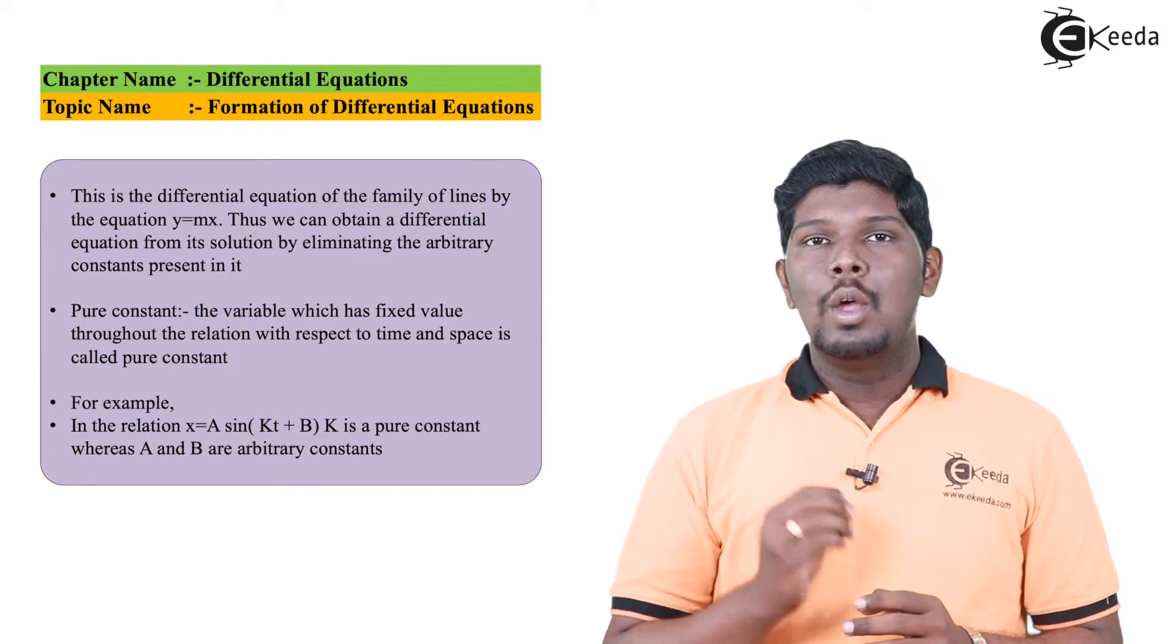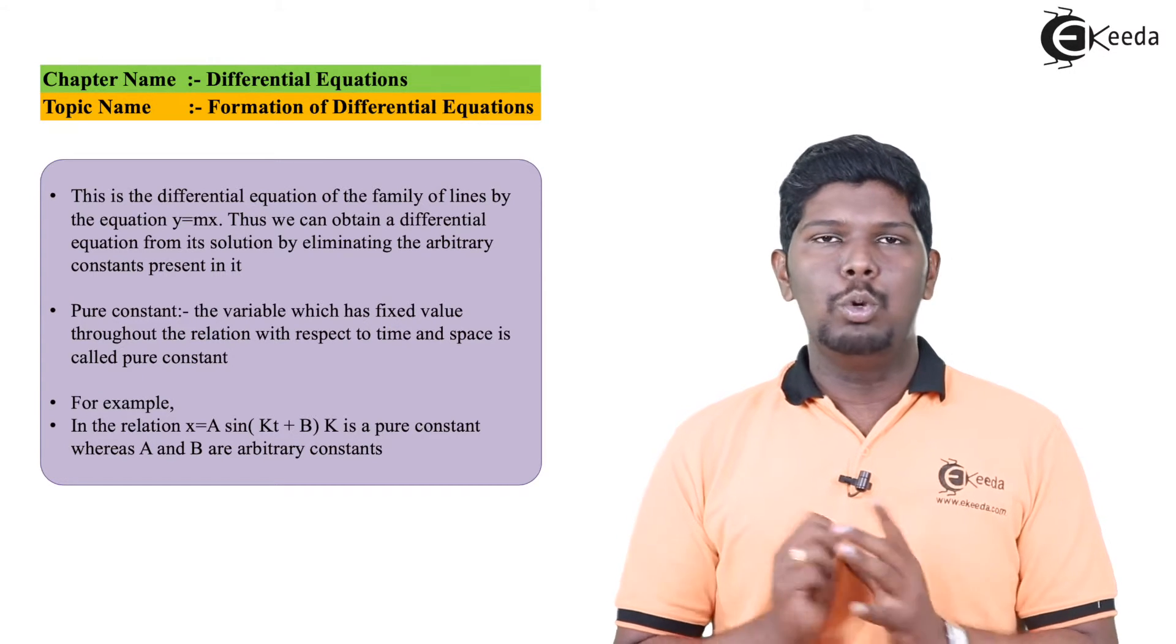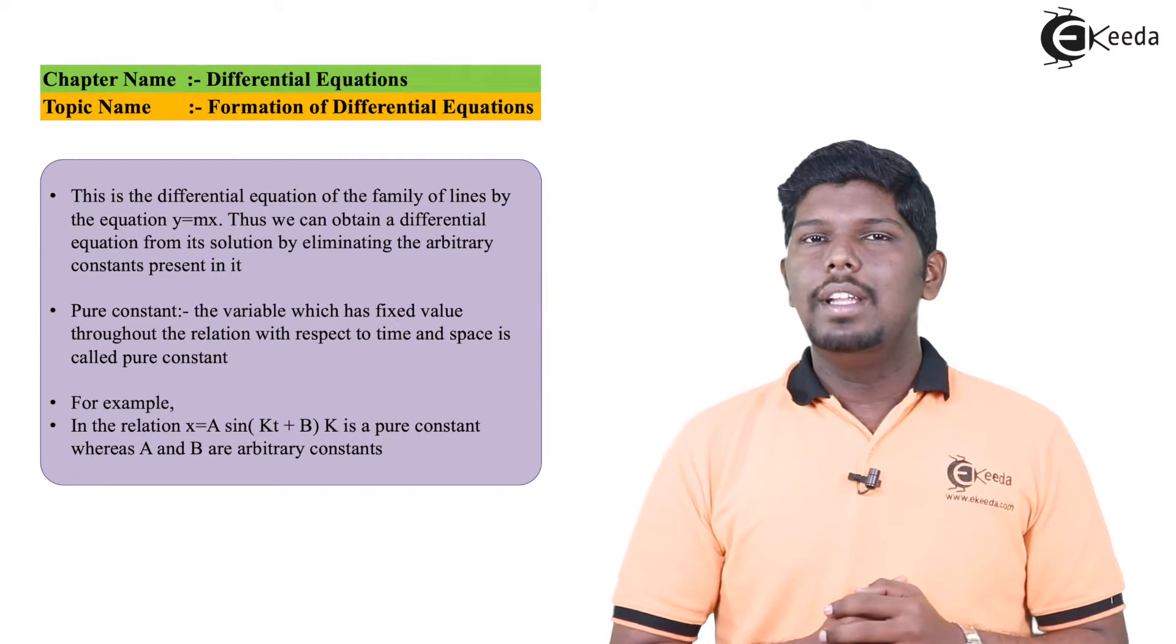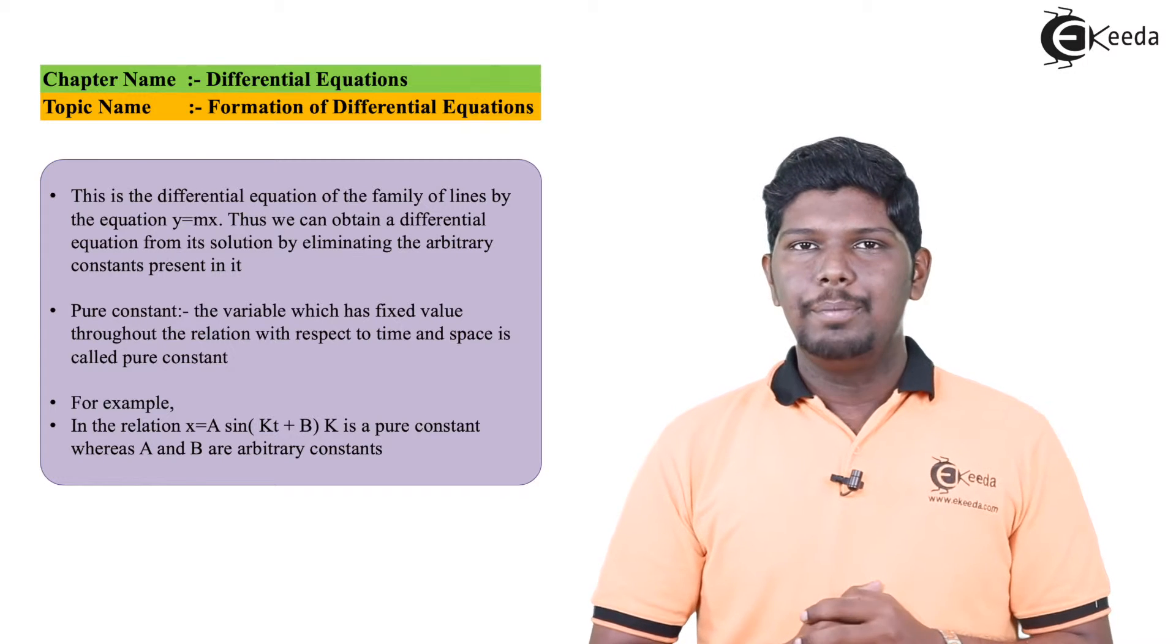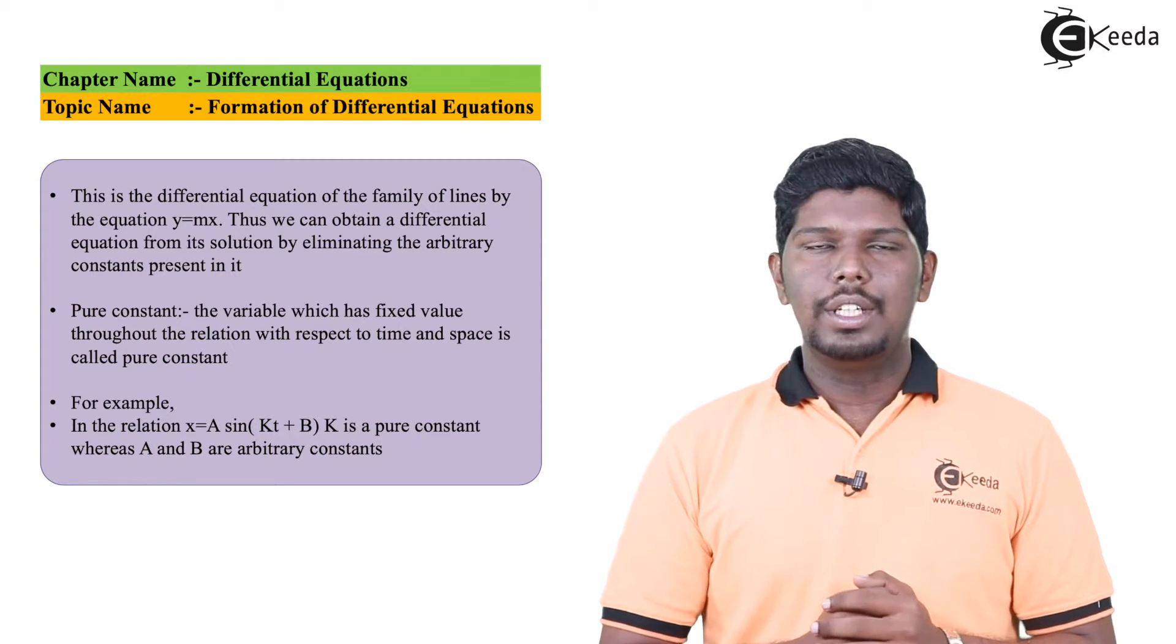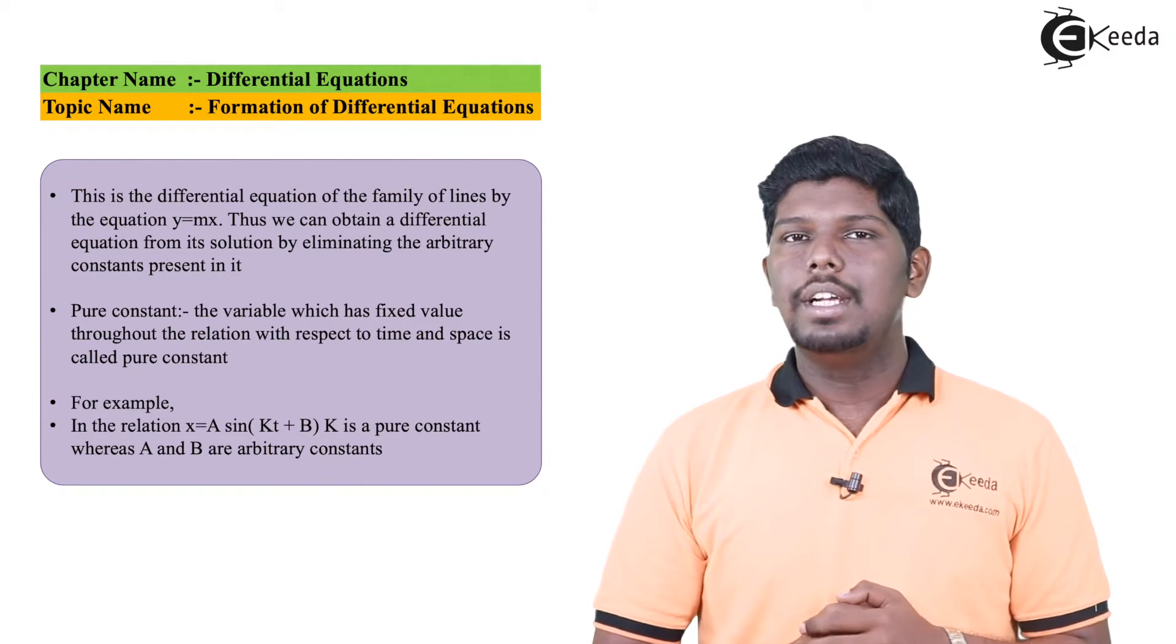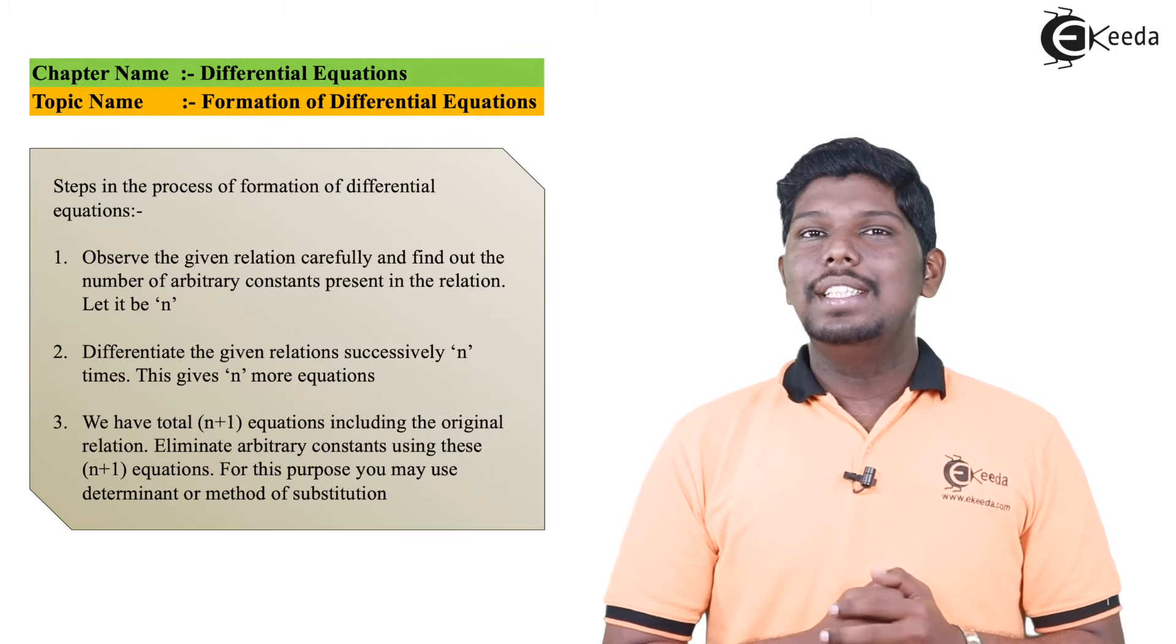So the definition for pure constant is the value which remains constant with respect to time and space. Whenever you will calculate it, it will be the same only. Such constants are called pure constants. For example, in the given relation we have x equals a sin(kt) plus b. Here we have three different constants: a, b, and k. Out of that, k is a pure constant while the remaining two, a and b, will be the arbitrary constants.